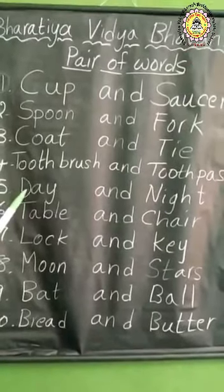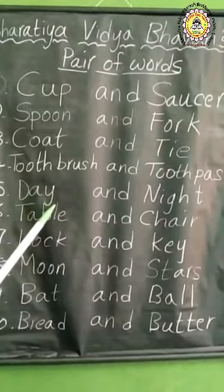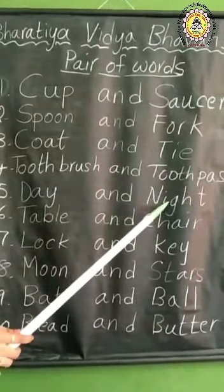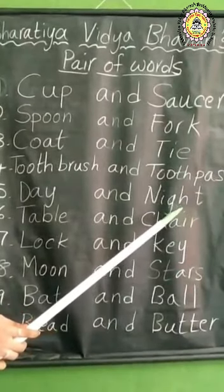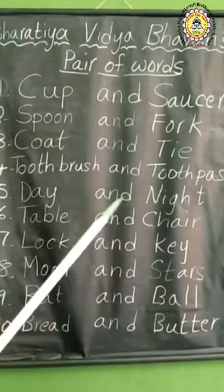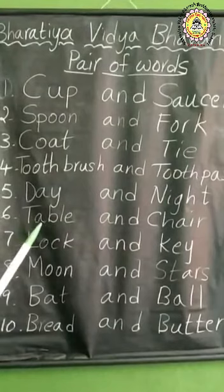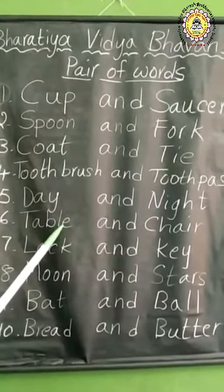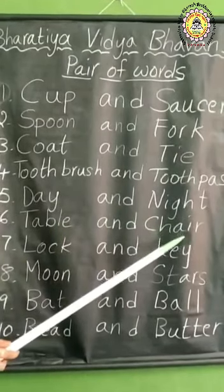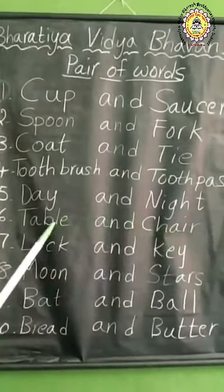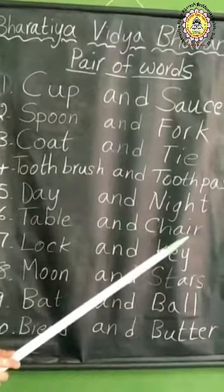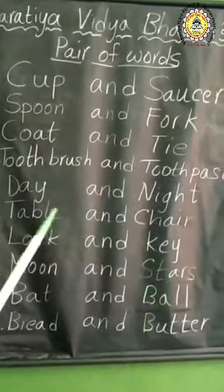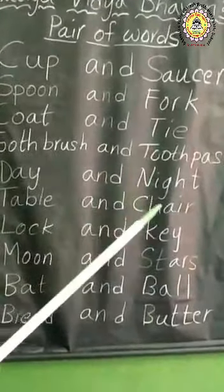Spell these words, children. D-A-Y — day. Day and night. N-I-G-H-T — night. Next one: T-A-B-L-E — table. What is the pair word of table? C-H-A-I-R — chair. Table and chair. Do you call it as chair and table? No, we should not call it like that. We call it as table and chair. Spoon and fork — not as fork and spoon.